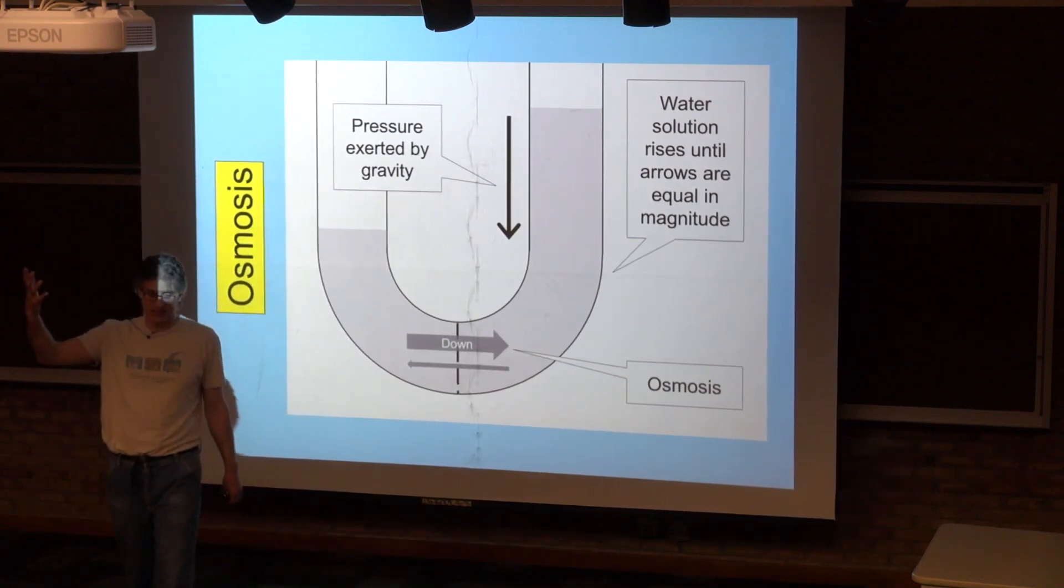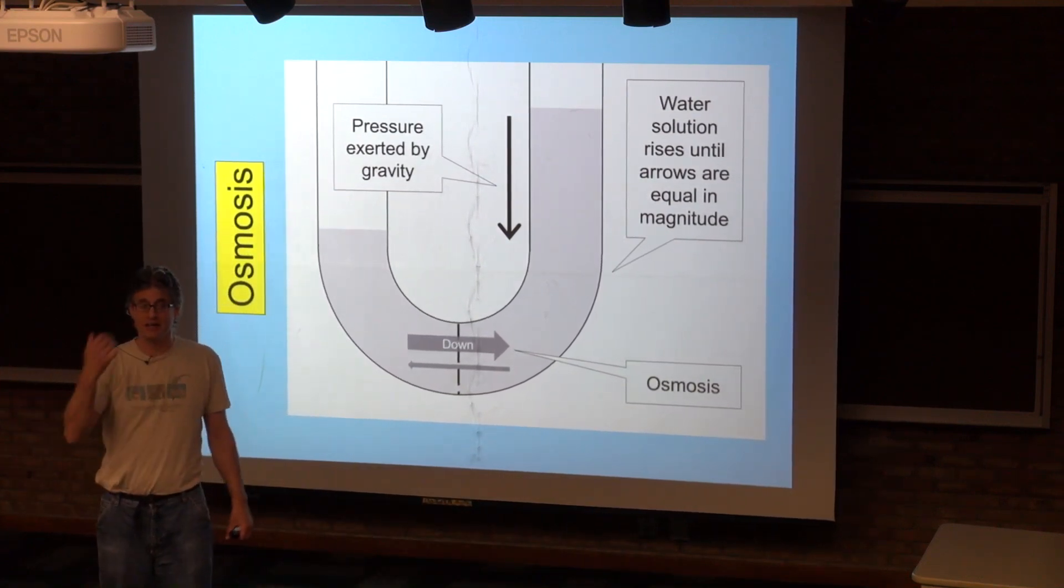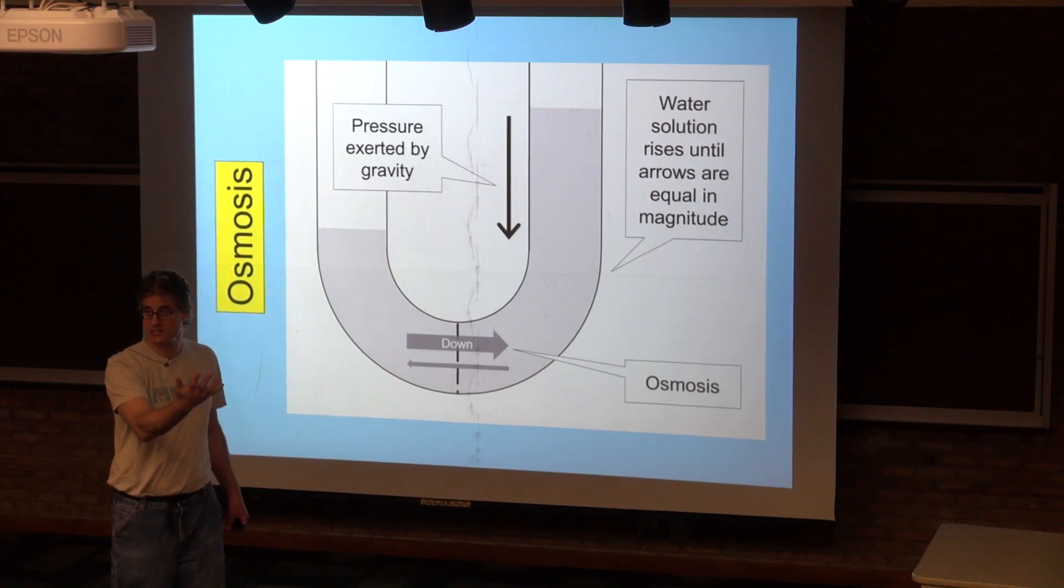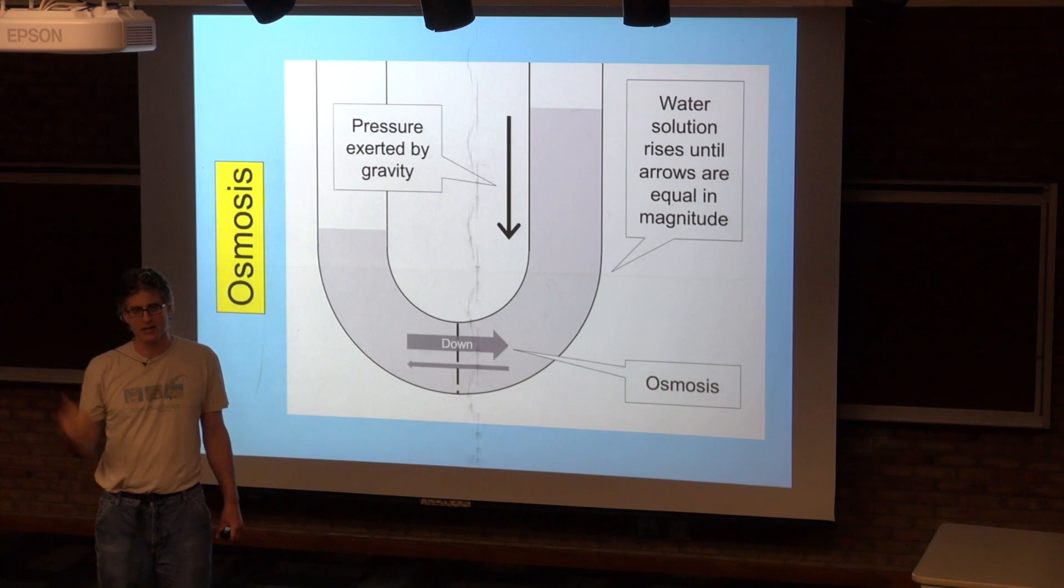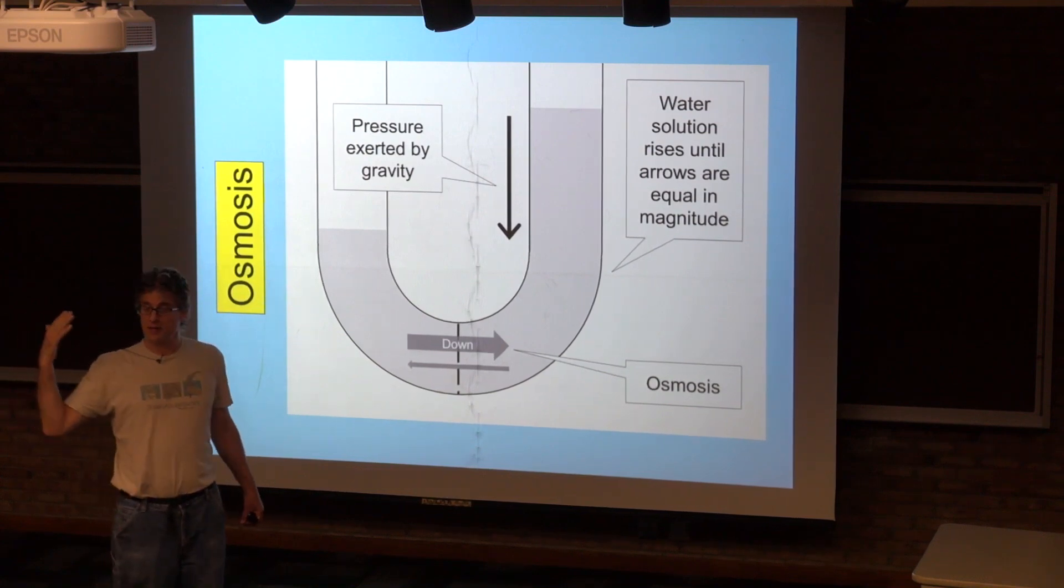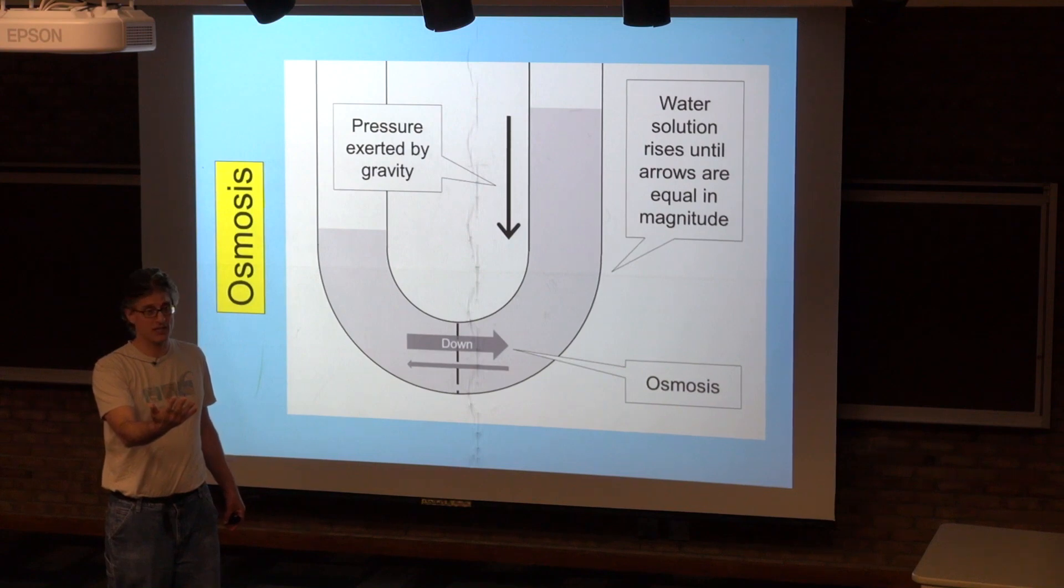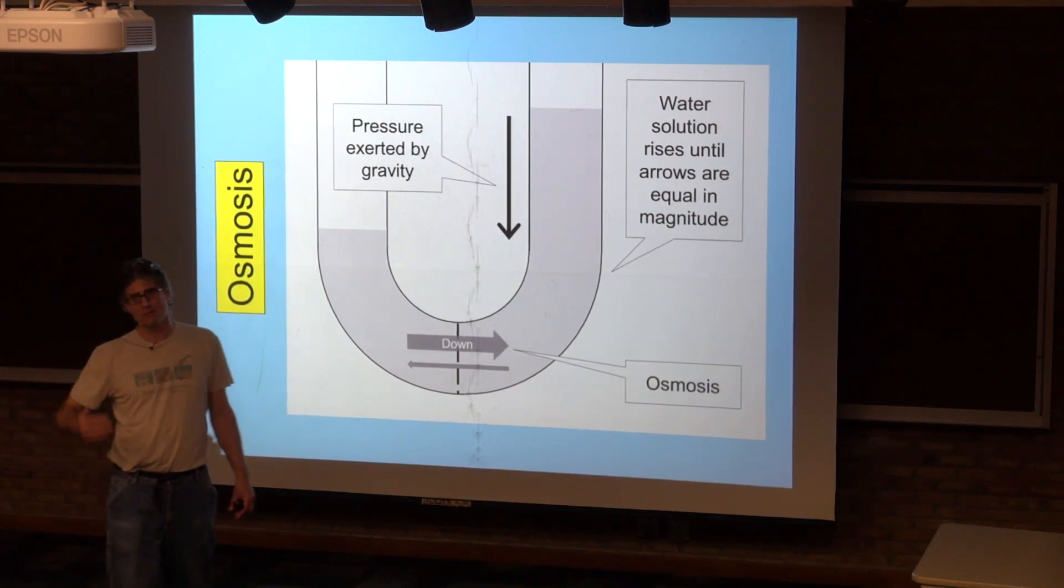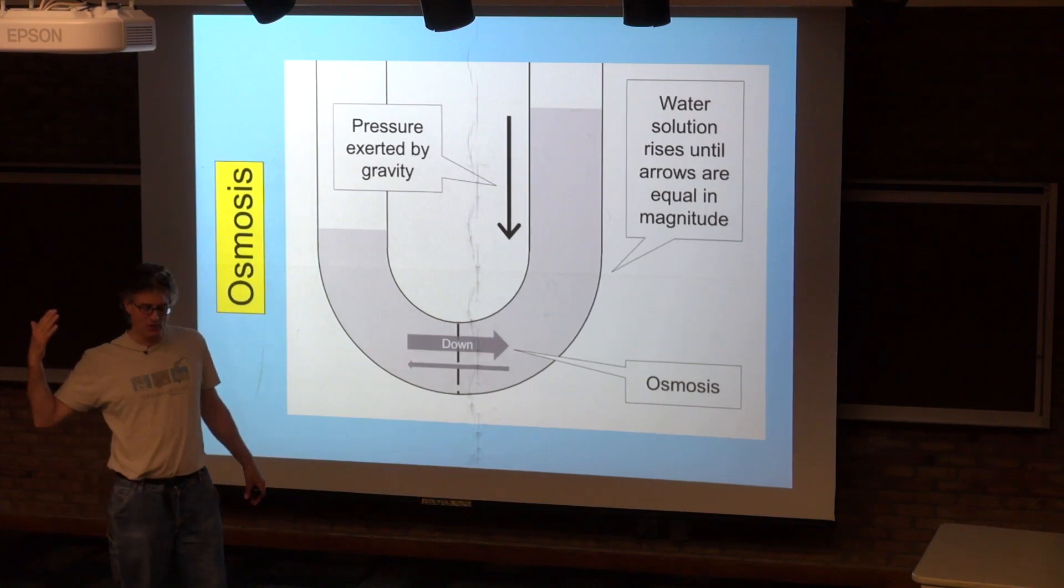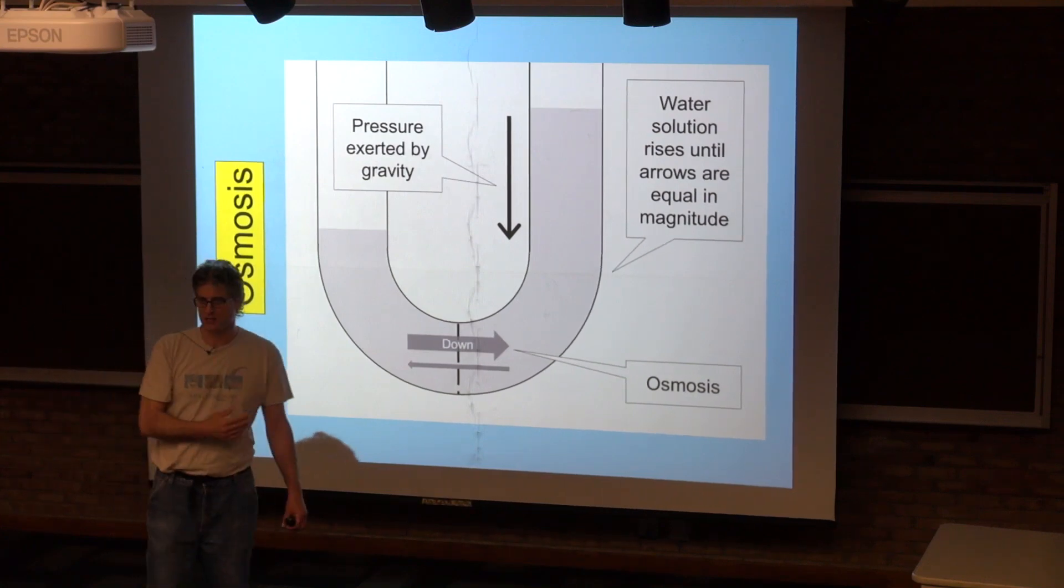If you have distilled water, which has nothing in it but water, on one hand and a saturated salt solution on the other, two sides of the membrane, the water is going to go from the distilled water side to the saturated salt solution side. It's just going to flow in that direction. It's going to flow in both ways, but most of the flow is going to be towards the high salt concentration.